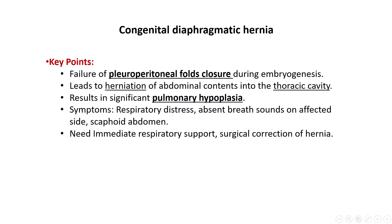In summary, congenital diaphragmatic hernia results from the failure of the pleuroperitoneal folds to close, leading to herniation of abdominal contents into the thoracic cavity and subsequent pulmonary hypoplasia. This condition presents shortly after birth with respiratory distress, absent breath sounds on the affected side, and specific radiographic findings such as thoracic bowel loops and mediastinal shift. Understanding the embryologic basis and clinical presentation of CDH is essential for timely intervention and is a key topic for the USMLE Step 1 exam.